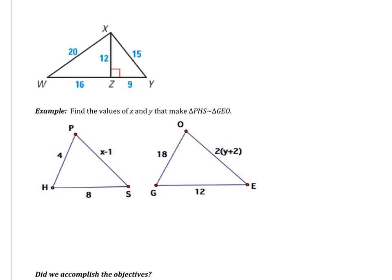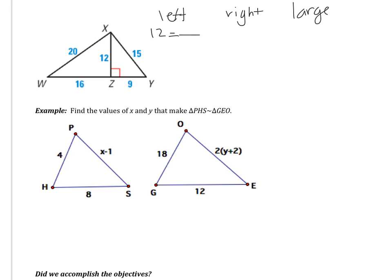This next example has us looking at three different triangles: the triangle on the left, the triangle on the right, and the large triangle. First, let's compare the left to the right. The triangle on the left has sides of 12, 16, and 20. The triangle on the right has smallest side 9, medium side 12, and largest side 15. Simplifying: 12 over 9 divides by 3 to give 4 over 3; 16 over 12 divides by 4 to give 4 over 3; 20 over 15 divides by 5 to give 4 over 3. All ratios equal, so yes, the left triangle is similar to the right triangle.